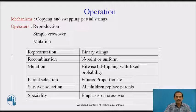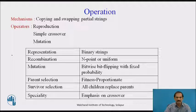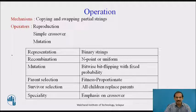The operations used are mechanisms like copying and swapping partial strings. The basic operators used are reproduction, simple crossover, and mutation. Every chromosome is represented as binary strings, and there is recombination at endpoints or uniformly.